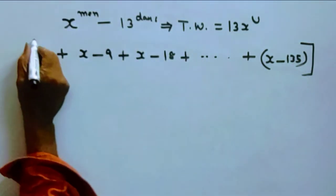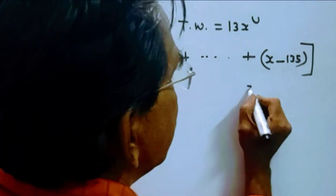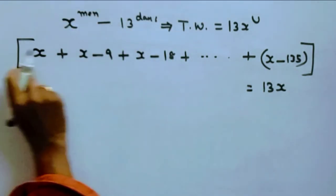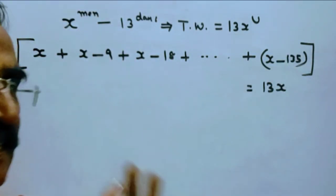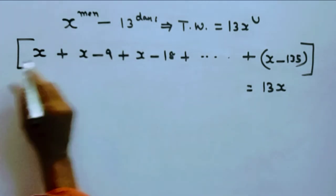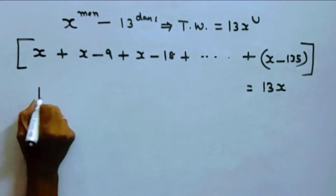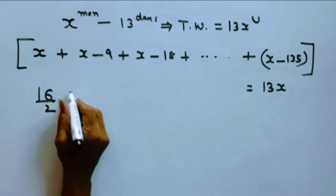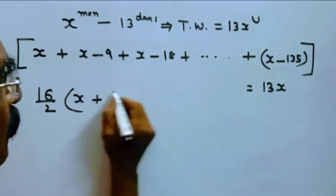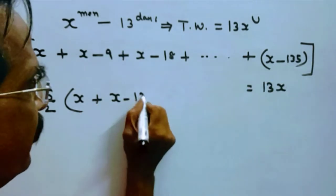So this is the total work completed. So that is equal to 13X. See friends, this is an arithmetic progression where the sum of the terms is n by 2 into first term plus last term. n, 16 terms, 16 by 2 into A plus N, A is X, first term and last term X minus 135.